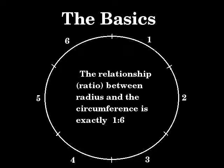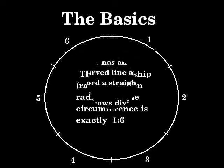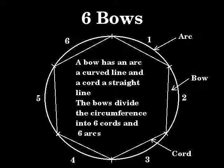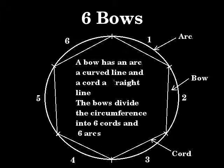This means that the relationship — the ratio between the radius and the circumference — is exactly 1 to 6. If we now draw straight lines between the six arcs of the circle, the circle will remain the same; however, instead of arcs we now have six bows. A bow has an arc (a curved line) and a cord (a straight line). A bow can measure both straight and curved lines. The bows divide the circumference into six cords and six arcs.